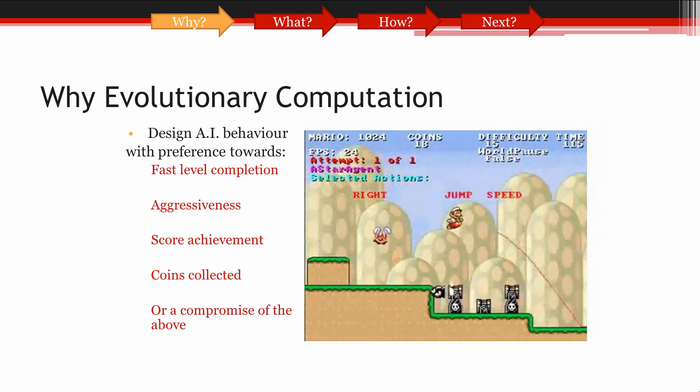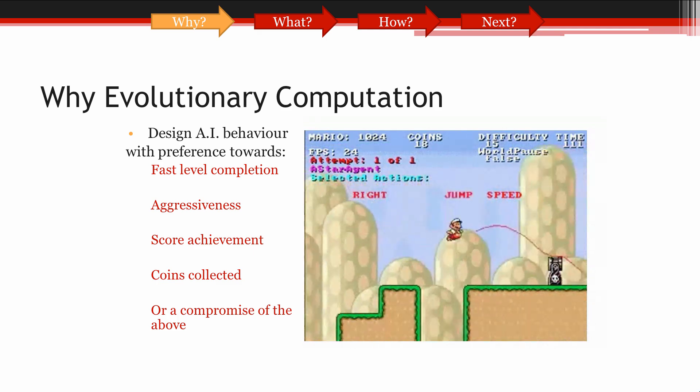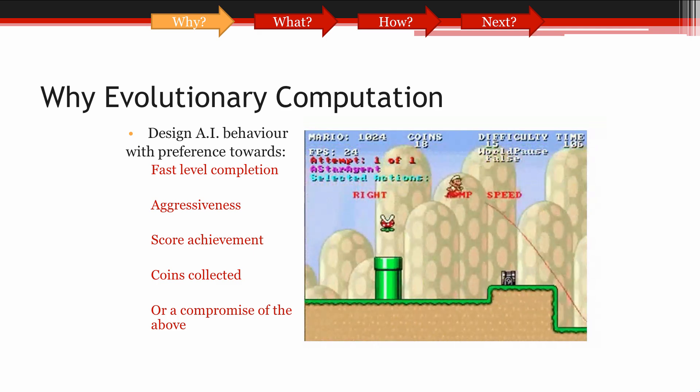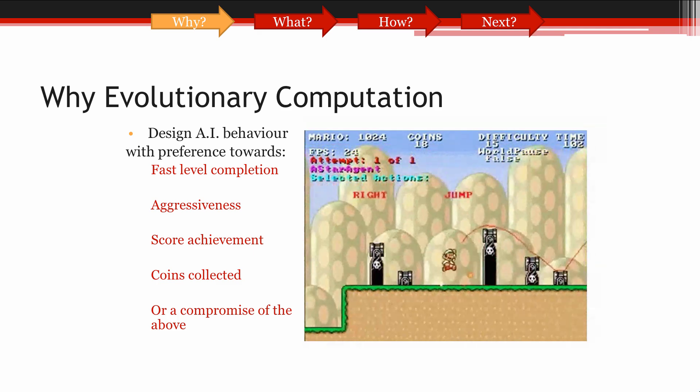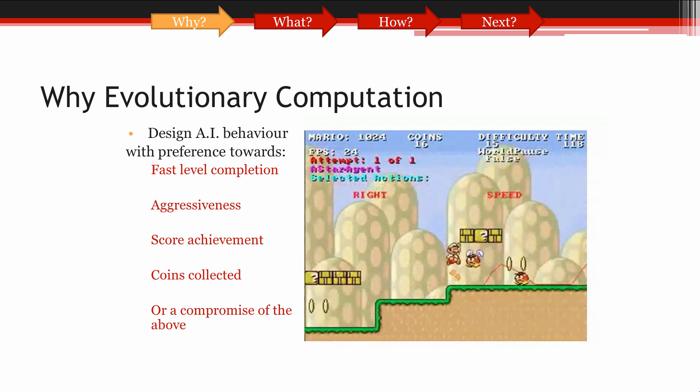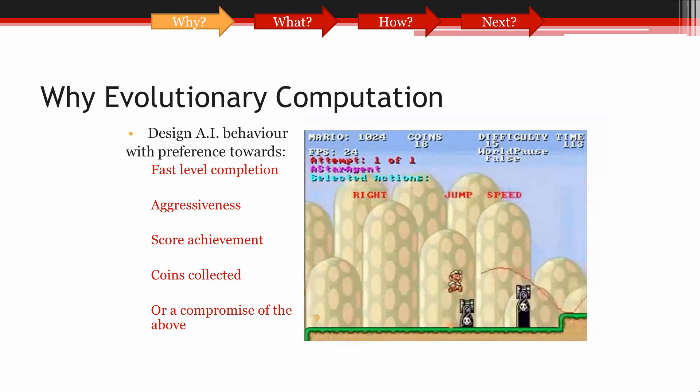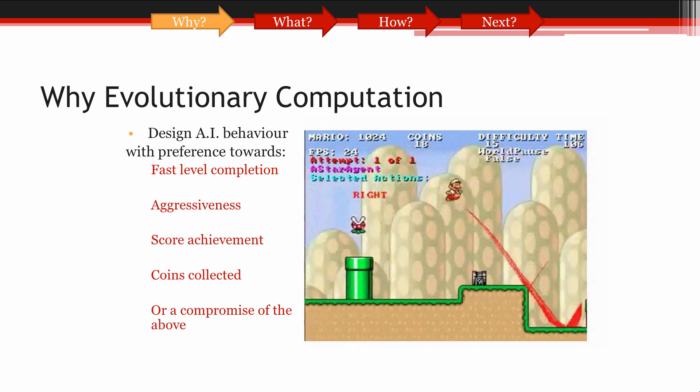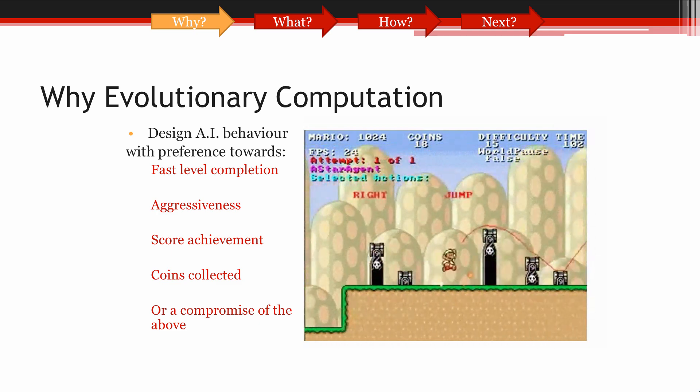It can also be applied to designing AI behaviour for video games, where, for example, we can focus on creating a Mario who is greedy and wants to collect as many coins as possible. There are many applications for evolutionary computation, and we've barely scratched the surface in these last few minutes.